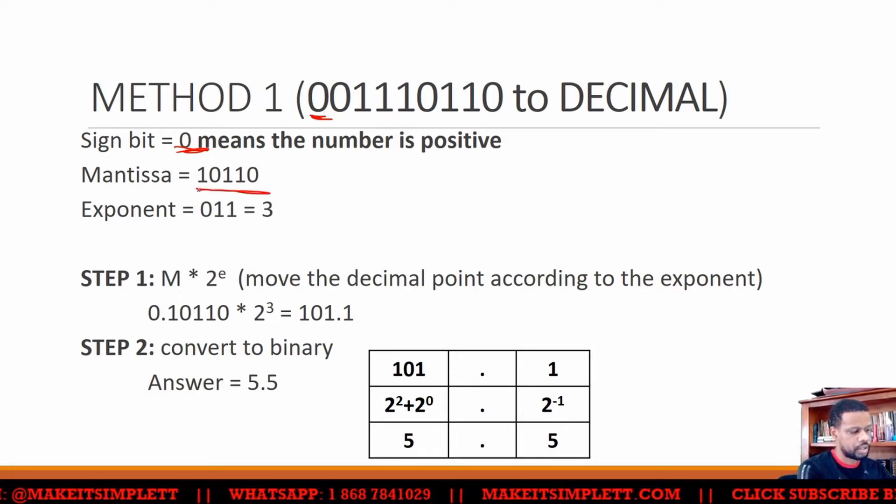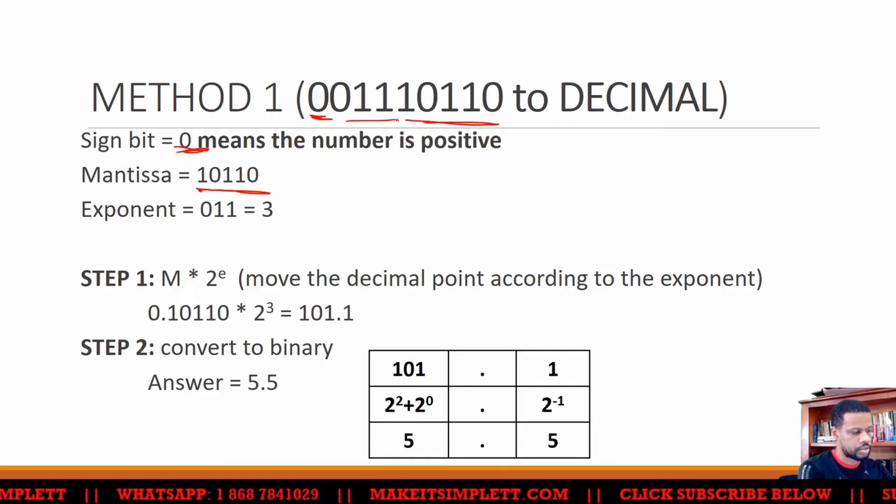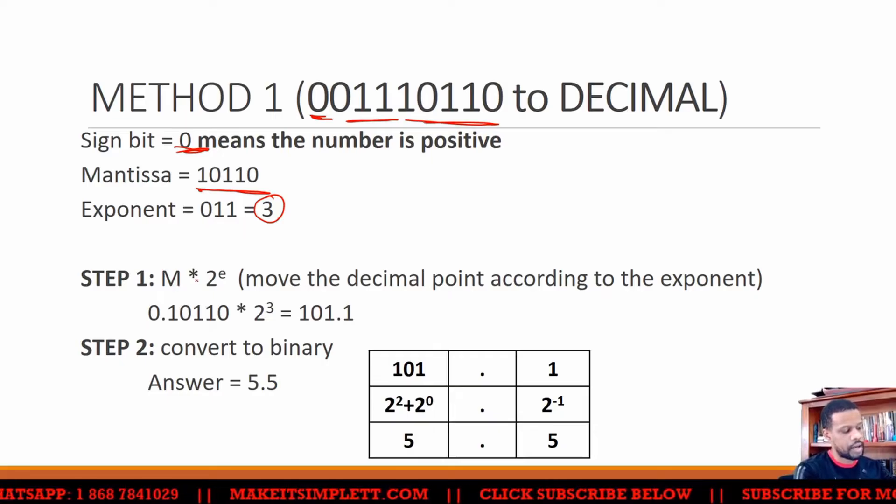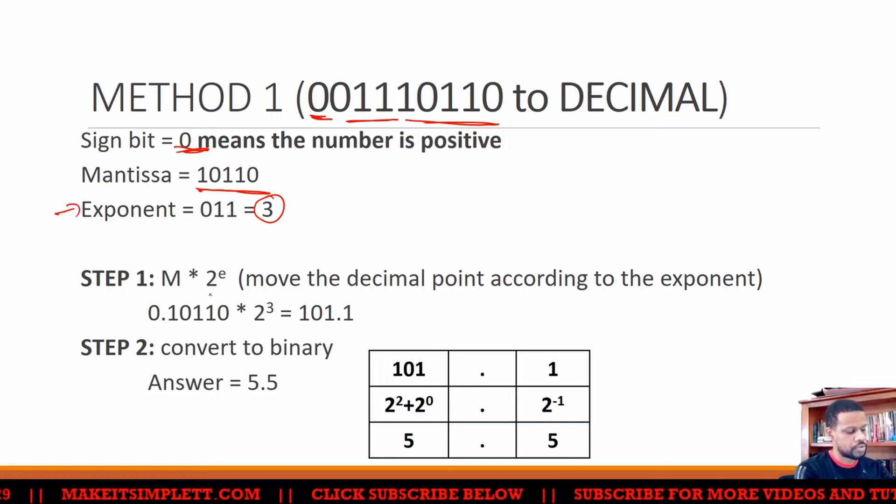The mantissa will be 10110, which is here. And the exponent is 011. So we know this is to the power of 3. So step 1 is multiply M by 2 to the power of E. E is for exponent. So 2 to the power of 3 as well.